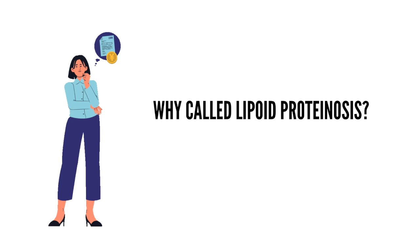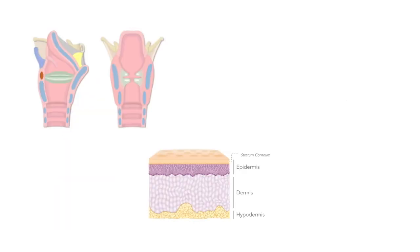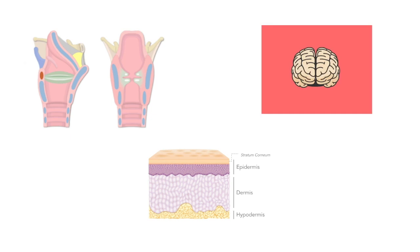Hyaline-like material deposits in different organs, but there are few organs which are predominantly involved. These are the vocal cords, skin, hair, oral mucosa, and the brain. I'll be discussing the clinical features of each one by one.